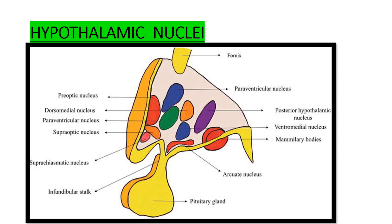Coming to hypothalamic nuclei — hypothalamus has lots of nuclei. These include the preoptic nucleus, supraoptic nucleus, suprachiasmatic nucleus, paraventricular nucleus, dorsomedial and ventromedial nucleus, posterior hypothalamic nucleus, mammillary bodies, and arcuate nucleus.